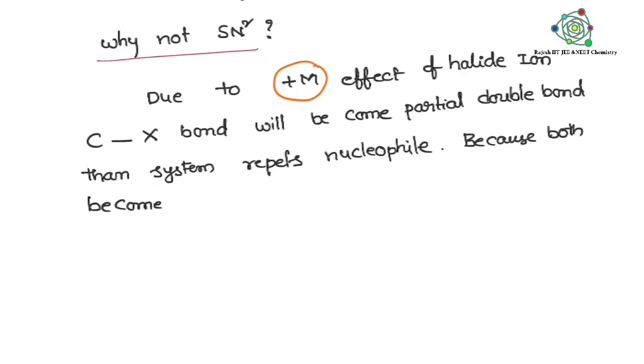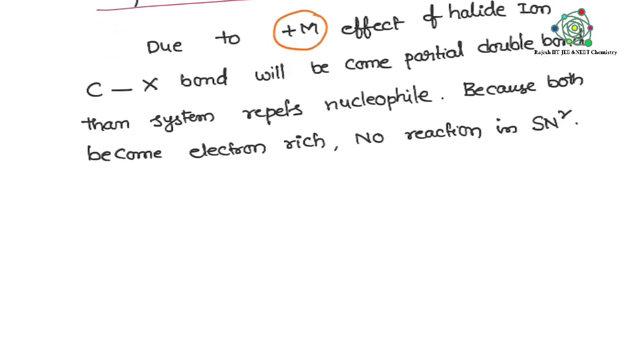System is repelling that nucleophile because both are electron rich. Double bond is electron rich and nucleophile electron rich - both repel with each other. So there is no SN2 also. So therefore, we can conclude these are not involving in the SN1 and these are not involving in the SN2 also.